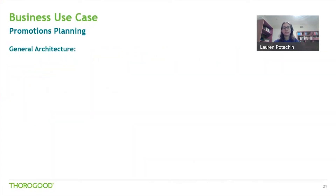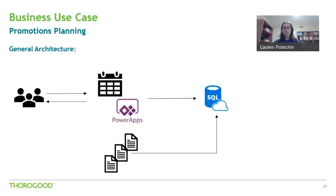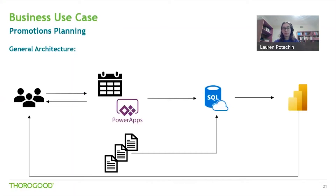Here's how the solution is laid out. It starts with the promotions planner, who can input, edit, and view the promotions data in the PowerApp. The PowerApp writes promotions data directly to a SQL table. At the same time, the external point of sales data is uploaded directly to SQL. Then the SQL table is used for a Power BI dashboard where the user can visualize the two sets of data and use those insights to plan future promotions.